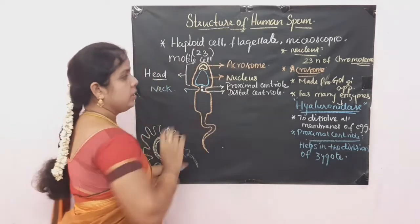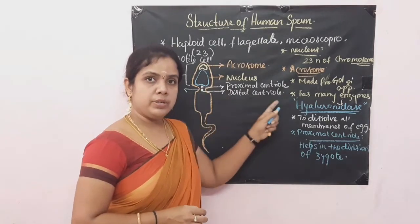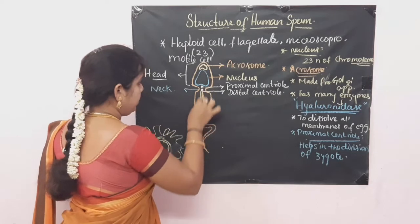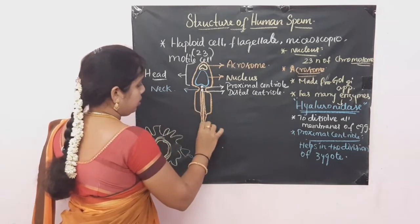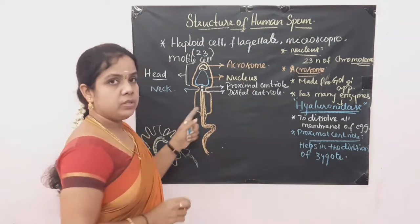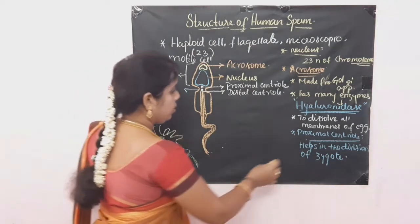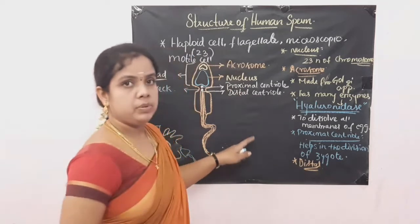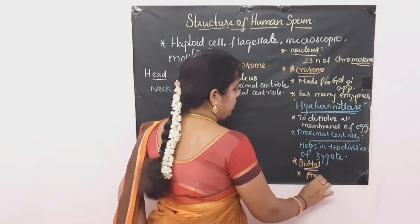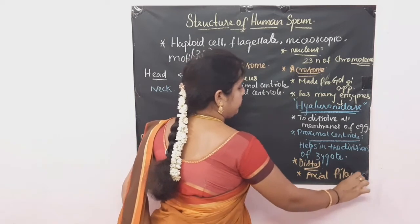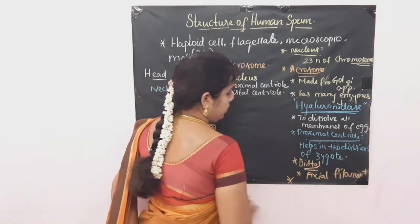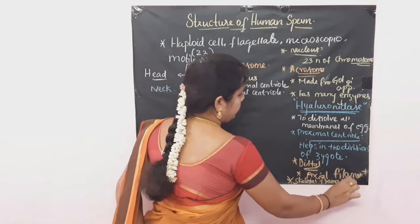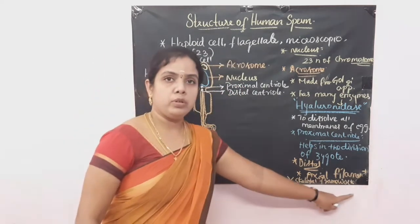The distal centriole helps in the production of the axial filament, which runs through the tail part. This axial filament gives the skeletal framework to the sperm.